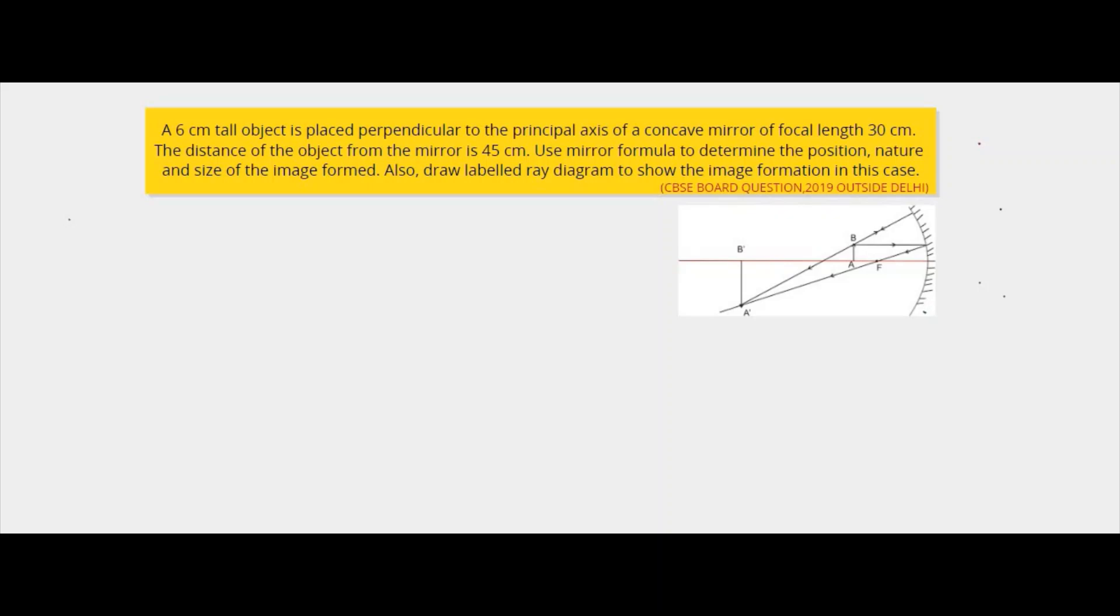Hello students, welcome back. Let's take up the next question. A 6 cm tall object is placed perpendicular to the principal axis of a concave mirror of focal length 30 cm.